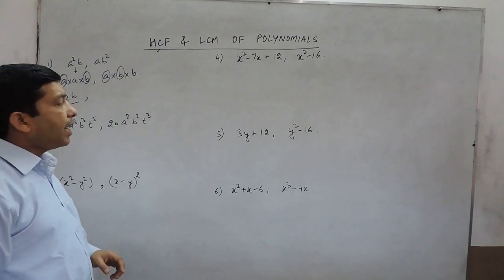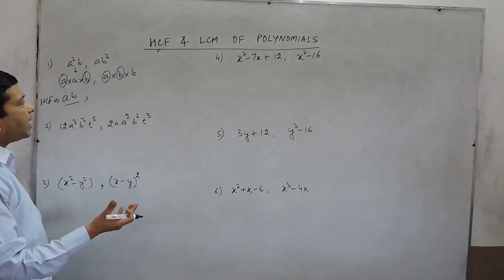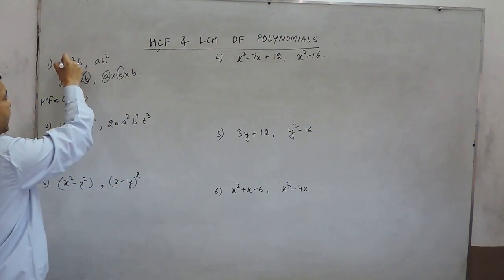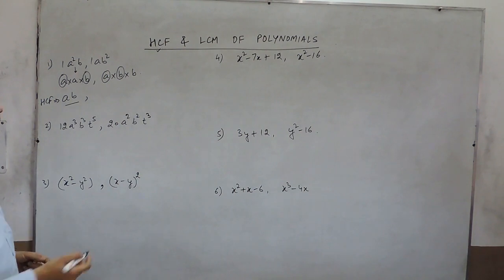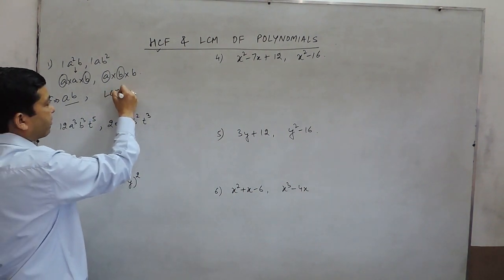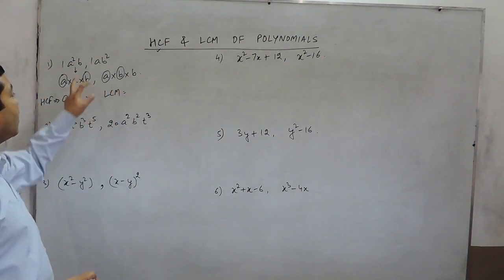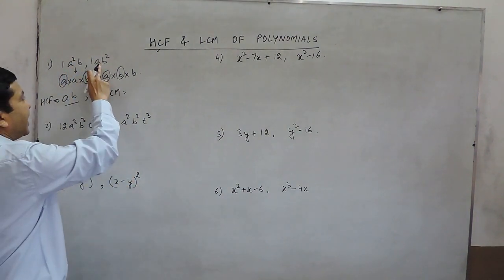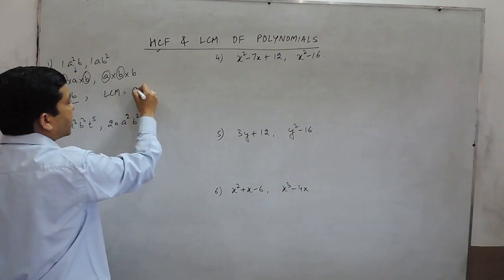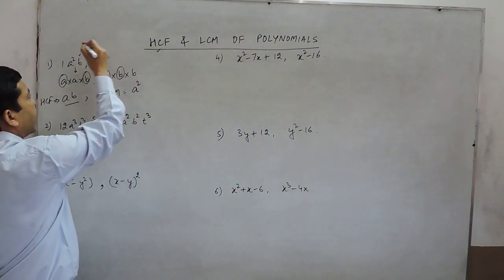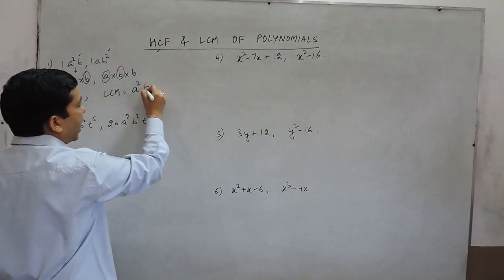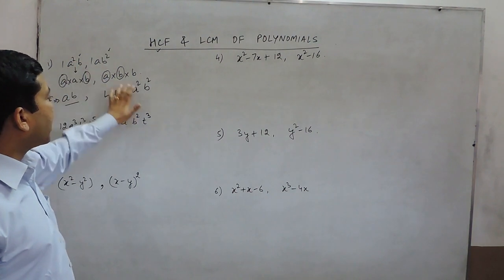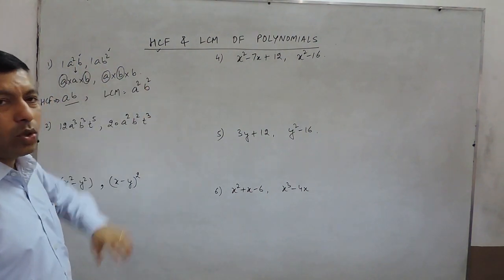When we talk about the LCM, we basically have to find out the LCM of the numerical coefficients. In this case, both the values are 1, so the LCM of the coefficients is 1. Then we have to look at the highest power of each variable. Here we have a and a², so the highest power of a is 2. We have b and b², so the highest power of b is also 2. So the LCM of these two monomials will be a²b².